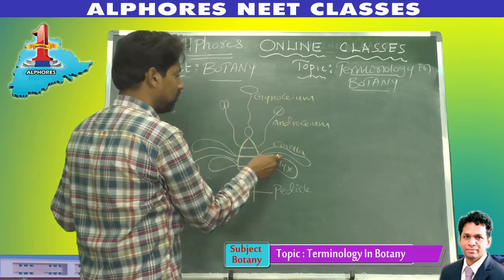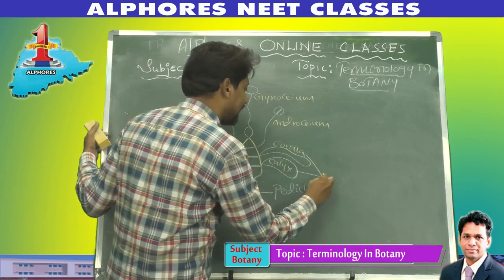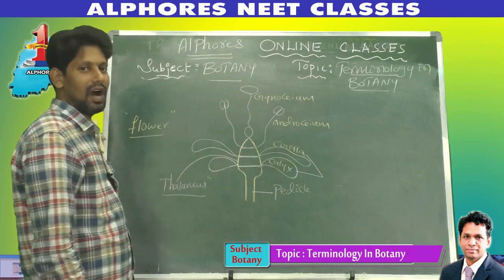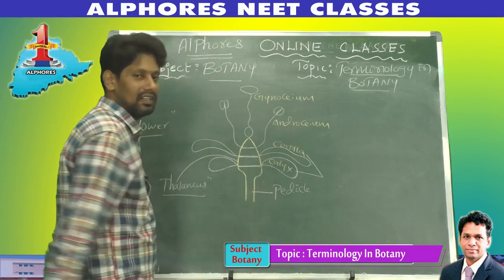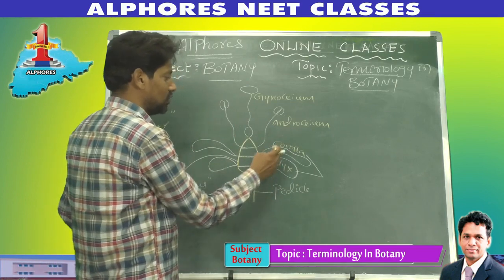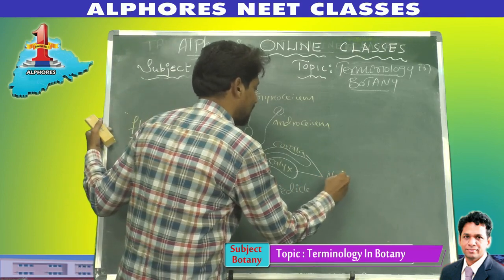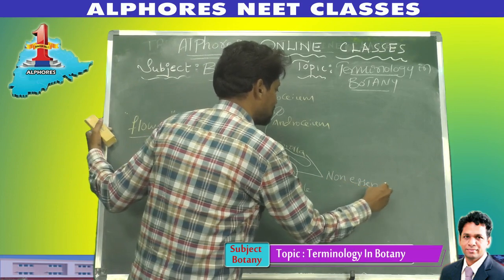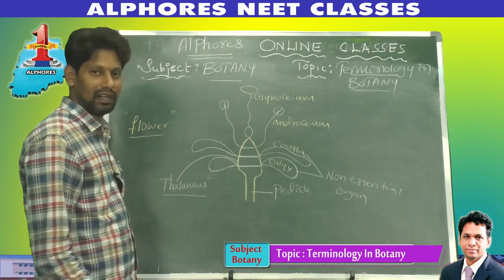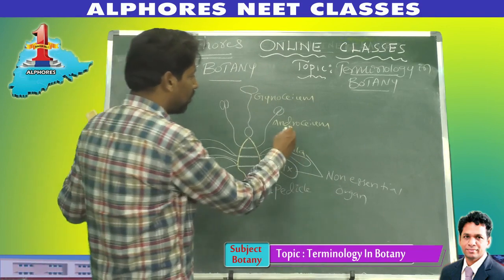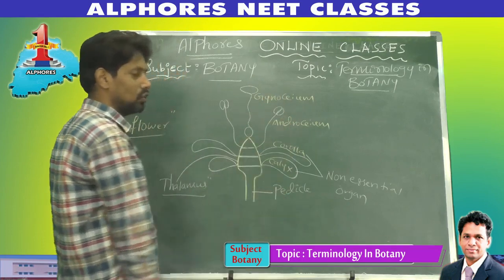In these four parts of a flower, calyx and corolla are not directly involved in sexual reproduction. That is why calyx and corolla together are called the non-essential organs of a flower.